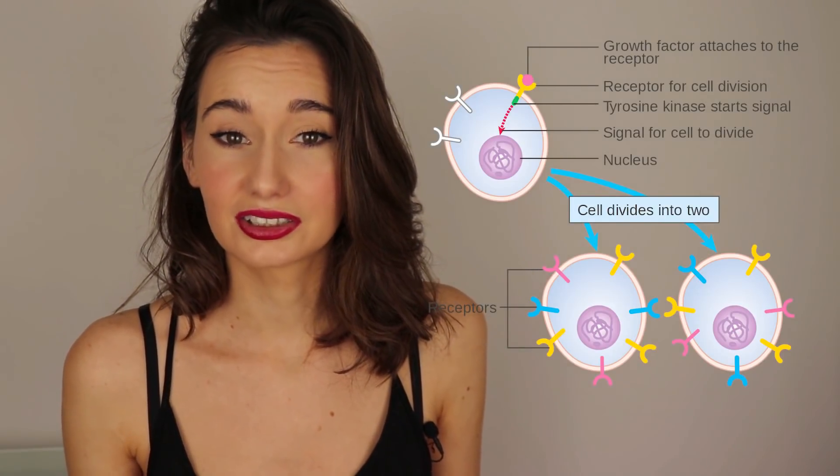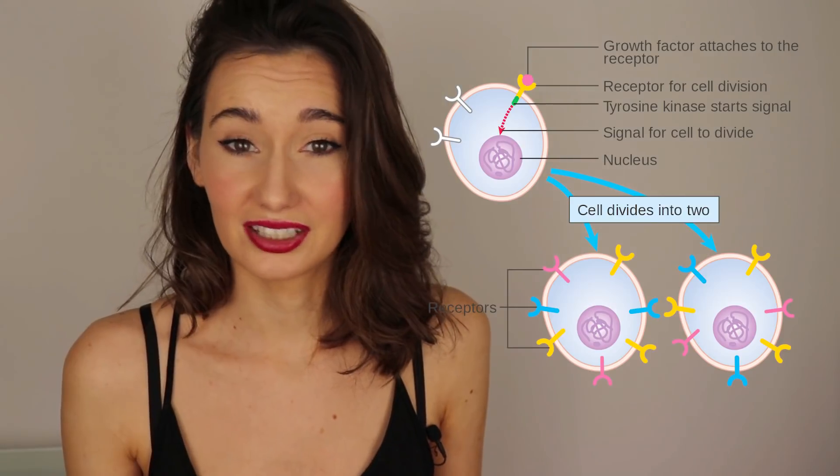Normally the body has exactly the right number of each cell type, and this is controlled by the cells themselves. They produce signals to control how often they divide. However, cancer starts when these signals are faulty, which is down to changes in the genes of a cell.